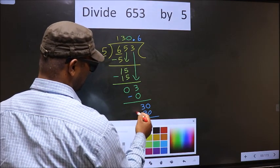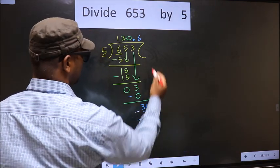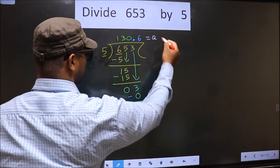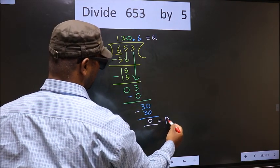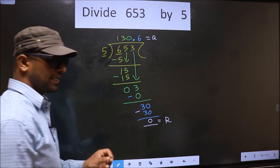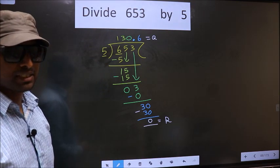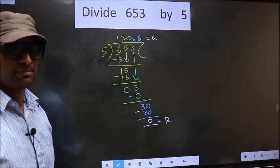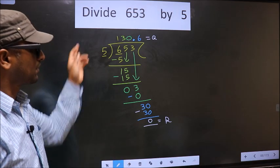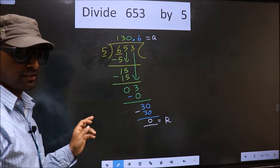So you subtract. You get 0. So this is our quotient. And this is our remainder. Did you understand where mistake happens? You should not do that mistake. Am I clear?